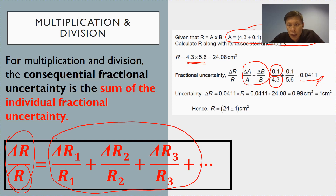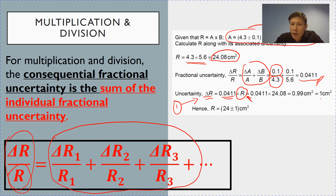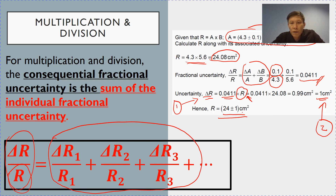To find the actual uncertainty of R, you have to multiply the fractional uncertainty with the value of R, which you calculate separately beforehand. One important thing to remember is that your final expression must always be rounded to 1 significant figure. Following all these steps, the answer for R would be 24, because you round 24.08 to the same number of decimal places as the uncertainty.